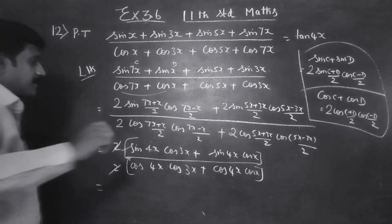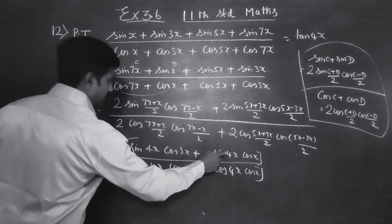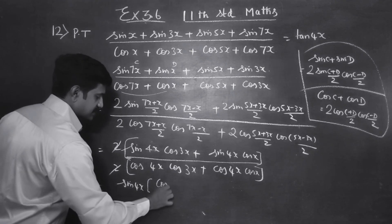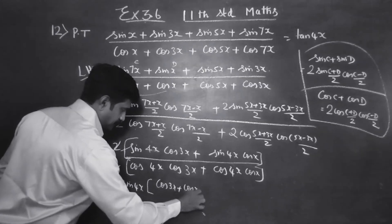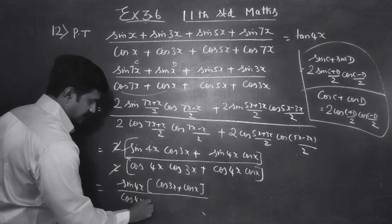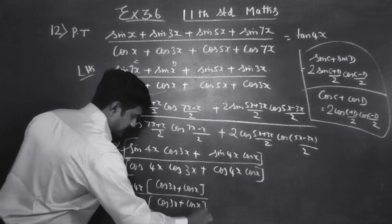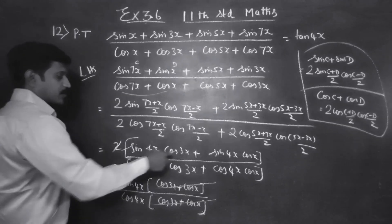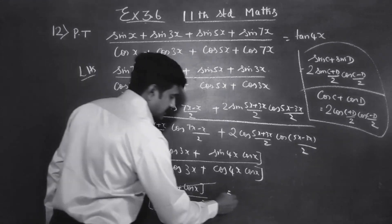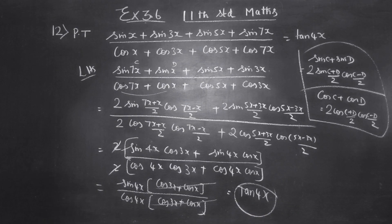In the numerator, sin 4x is common. The remaining bracket is cos 3x plus cos x. In the denominator, cos 4x is common, with the same bracket cos 3x plus cos x. The bracket cancels. What is sin divided by cos? The answer is tan 4x. This is your RHS. Thank you.